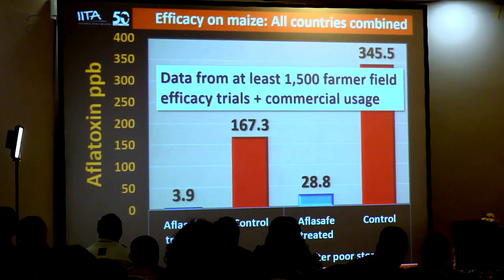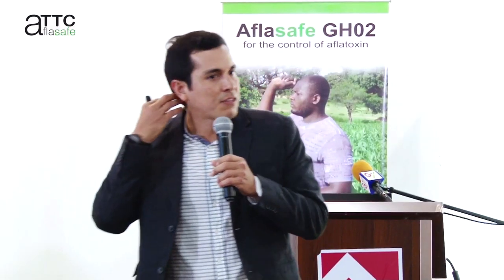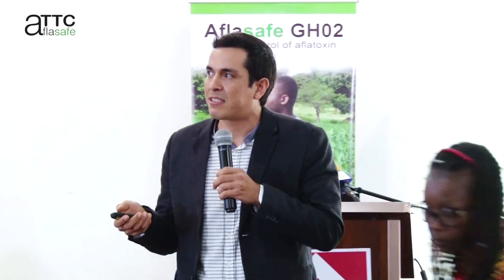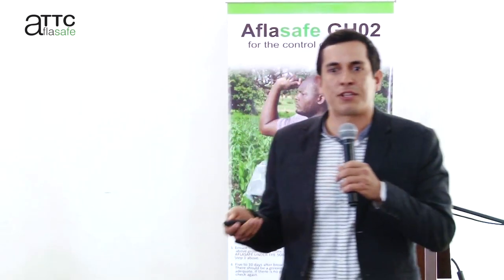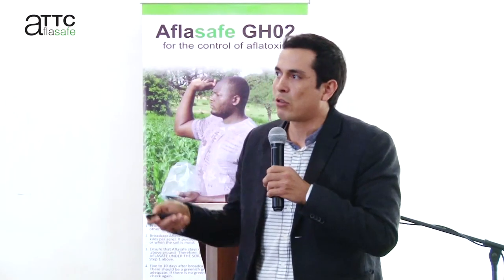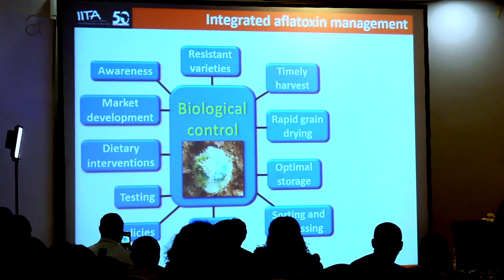This data is from over 1,000 farmer field efficacy trials and commercial usage in Nigeria. Biological control of aflatoxins using Aflasafe products is our signature technology, but it's not a silver bullet. We recommend it along with another package of technologies to help obtain the lowest level of aflatoxins in crops — it's not only Aflasafe, but a whole range of other technologies.